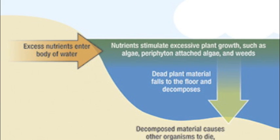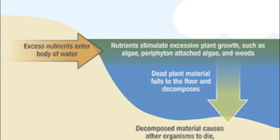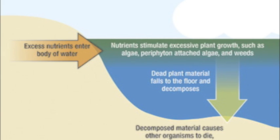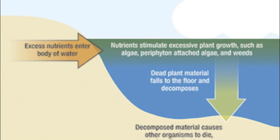They cause other organisms to die. You can now understand why phosphorus is bad for the environment, because eutrophication is also known under the name of water pollution.